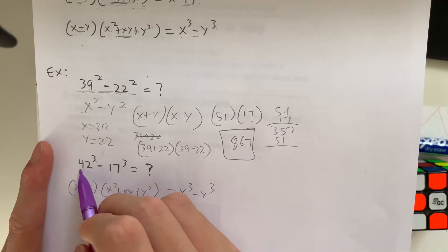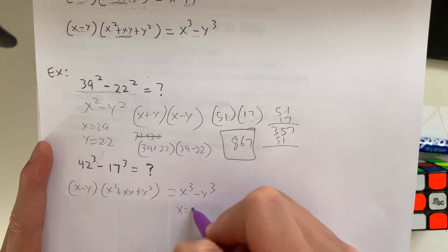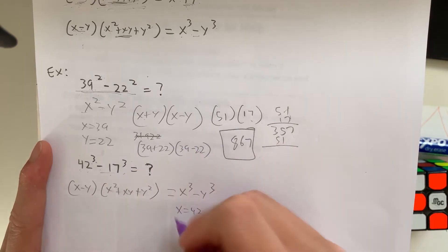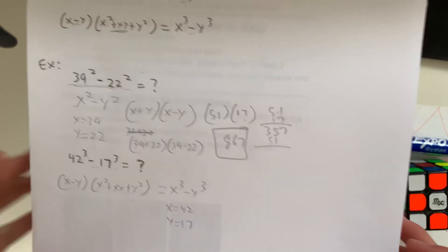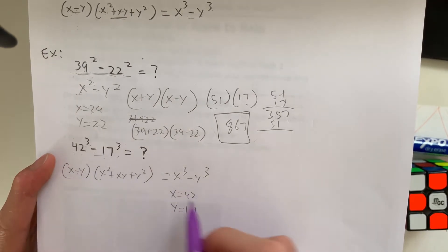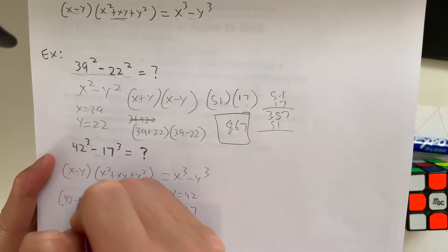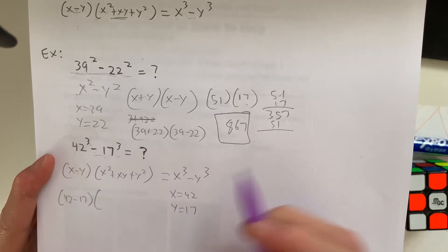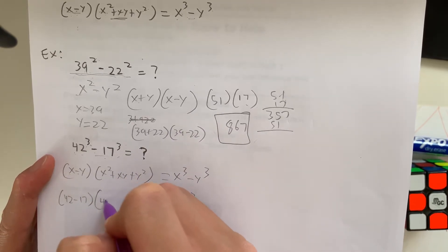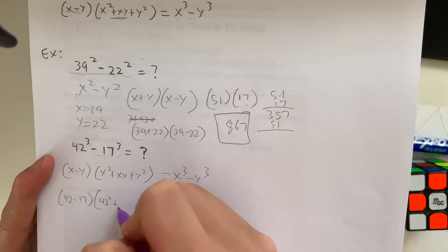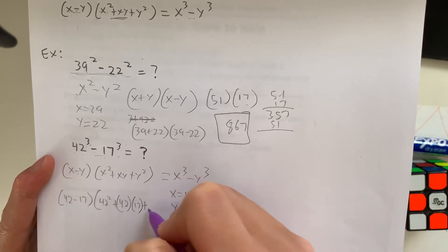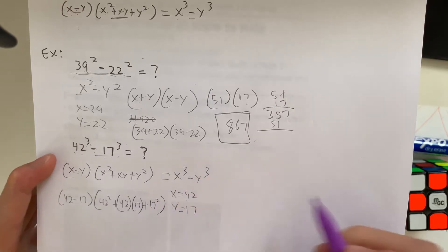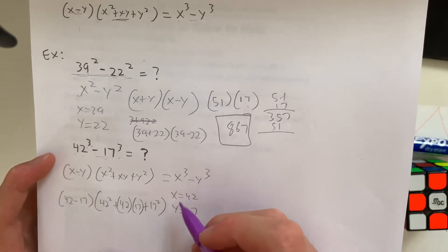In this case, what is x? x is going to equal 42. And what is y? y is going to equal 17. So let's do this. What's 42 minus 17? 42 minus 17 multiplied by 42 squared plus 42 times 17 plus 17 squared. So this is going to be how you do this.